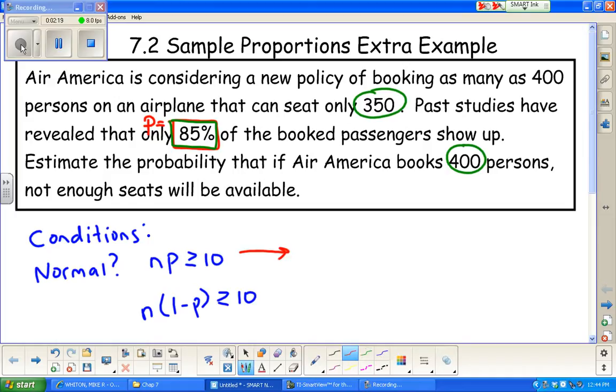Make sure you actually show your numbers being plugged in here. In our case, we have 400 persons, that's our n, and our p was given at the beginning. So we need to show that 400 times 0.85 is greater than or equal to 10, and 400 times 0.15 is also greater than or equal to 10. Both work, so we got a normal approximation.